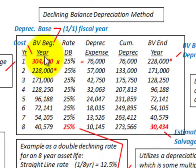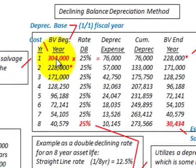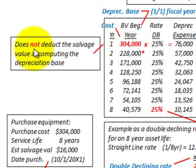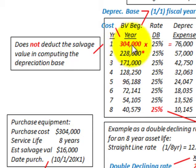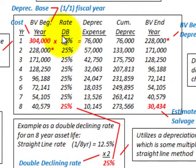Let's look at the table we'd set up to determine our depreciation. For the book value at the beginning of year 1, we start with $304,000. An important point when using the Declining Balance Method: it does not deduct the salvage value in computing the depreciation base. So you don't subtract the estimated salvage value of $16,000 — we simply start with our purchase cost of $304,000.